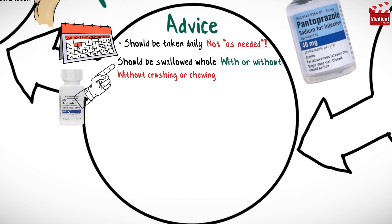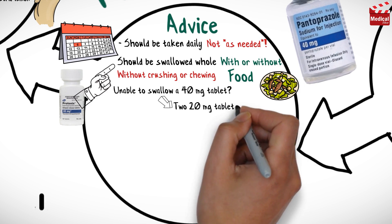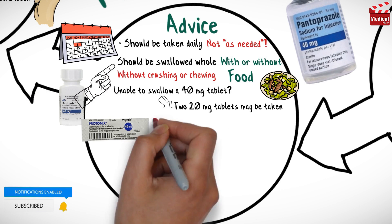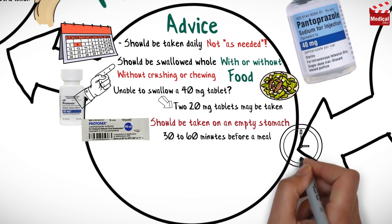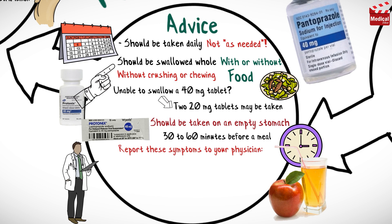Pantoprazole may be taken with or without food. For patients unable to swallow a 40 milligram tablet, two 20 milligram tablets may be taken. Oral suspension granule formulation should be taken on an empty stomach, preferably 30 to 60 minutes before a meal. It may be sprinkled into applesauce or mixed into a small volume of either apple juice or orange juice and swallowed immediately.